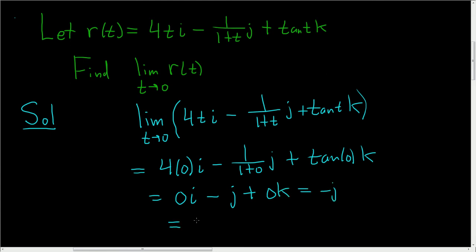I suppose you could write it as follows as well: 0, negative 1, comma 0, and that is the limit of the vector-valued function.